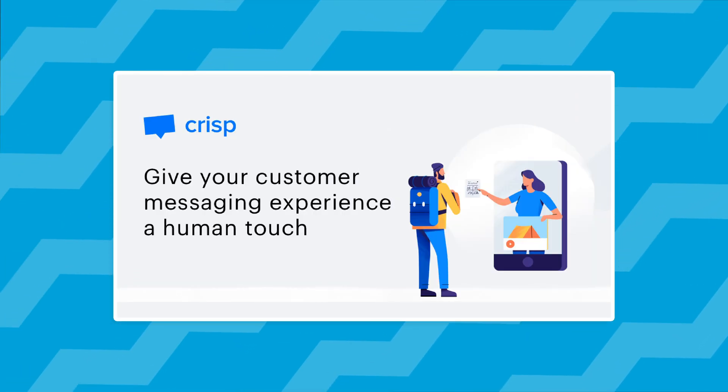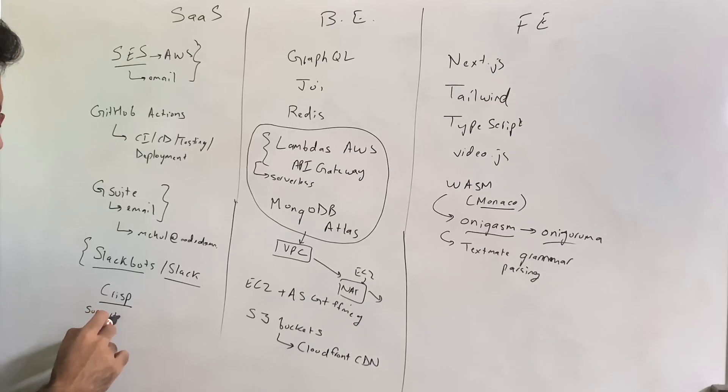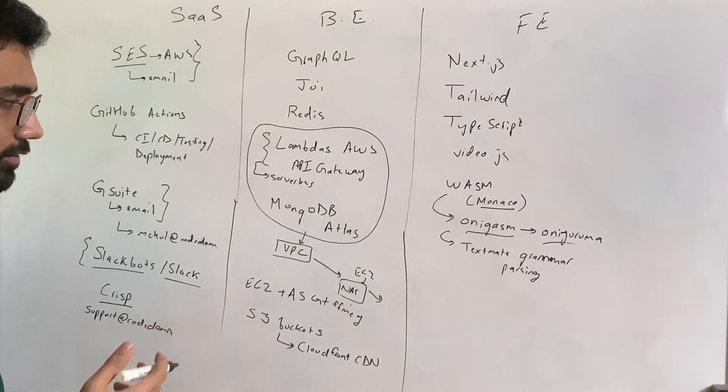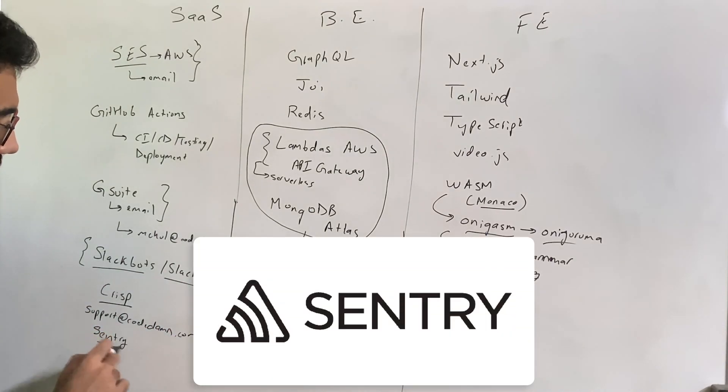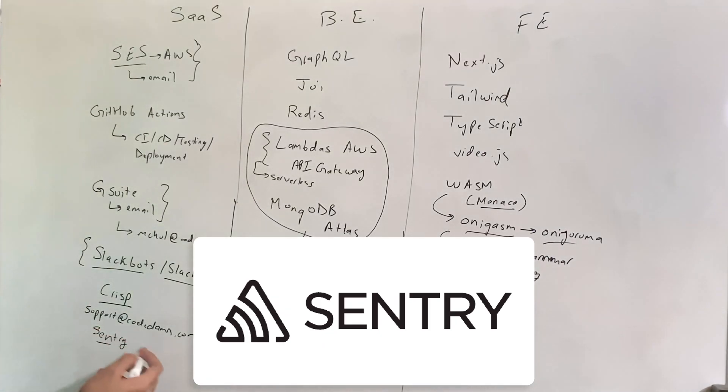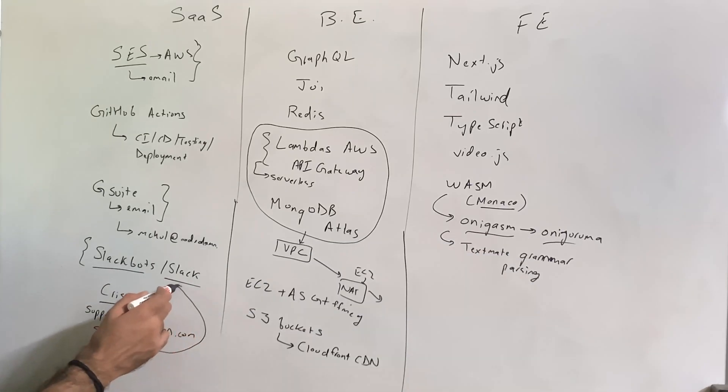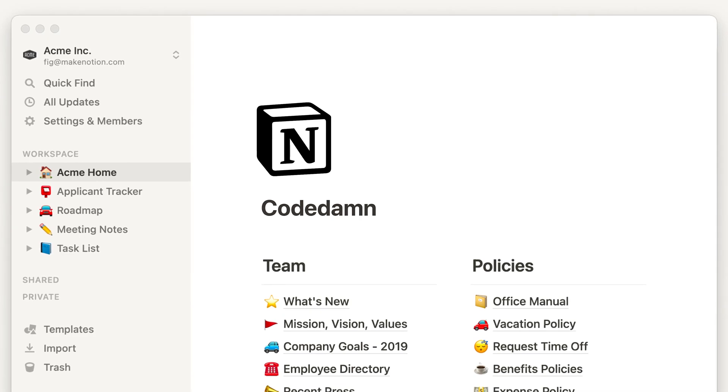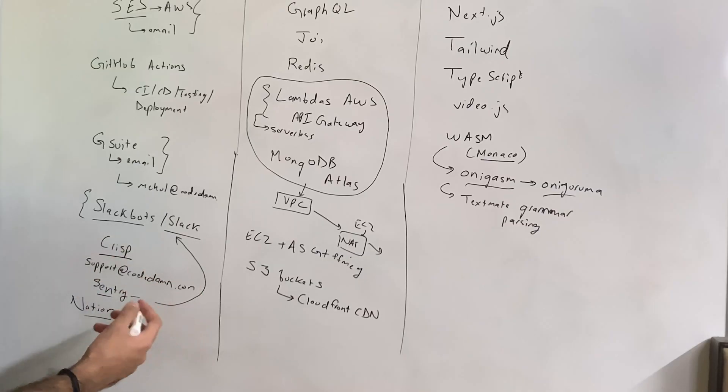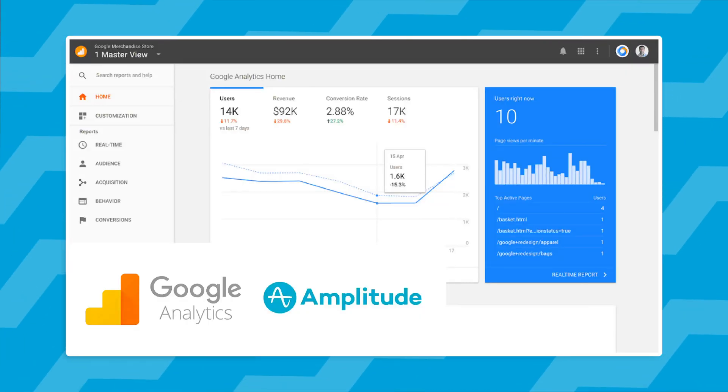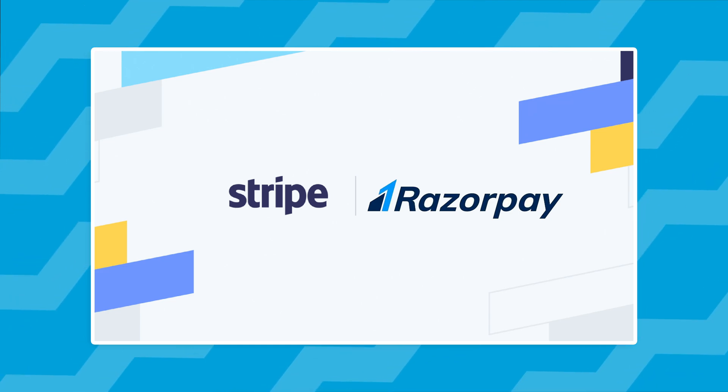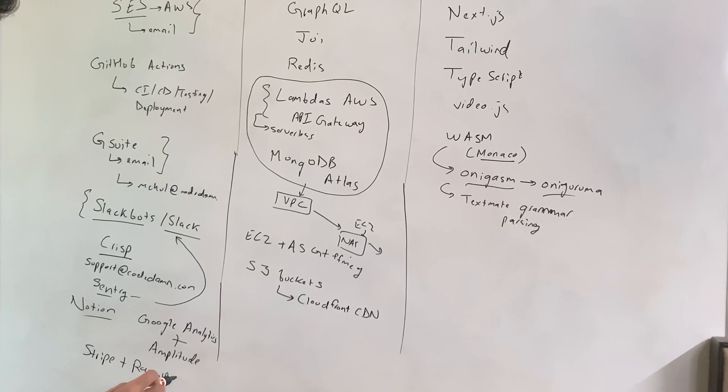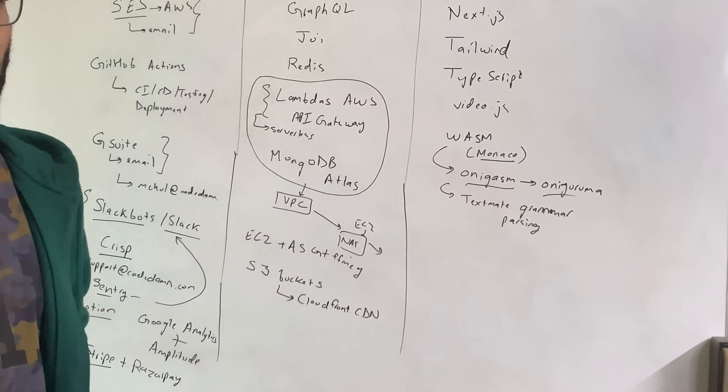For customer support, we use Crisp, where we have also redirected an email address so whenever you send an email to support@codedamn.com, it lands inside the Crisp inbox which is shared across the team so anyone can answer your query. We use Sentry for error handling on the website, so if the back-end blows or something crashes, Sentry receives those errors and broadcasts them into a Slack channel. For project management, we use Notion to a certain extent, but we're exploring other tools. For data analytics, we use Google Analytics combined with Amplitude for event-based analytics. For payments, we use Stripe and Razorpay at the moment, but we would definitely shift 100% to Stripe the moment Stripe introduces support for UPI and UPI Autopay.